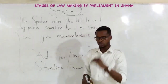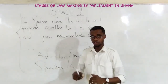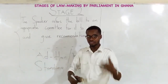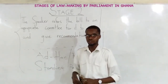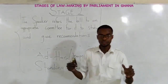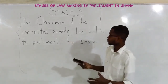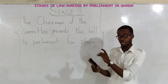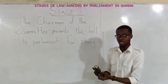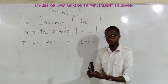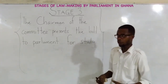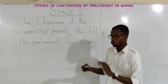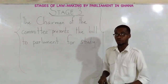Stage three is like a process — you don't have to miss a stage. It's like preparing food step by step. Under stage three, the chairman of the committee presents the bill to parliament for study. You remember the committee was formed under stage two and they worked on the bill to give their recommendations. After they are done, they will put the bill into proper shape and then present it back to the speaker of parliament, and then the house will have to study it.